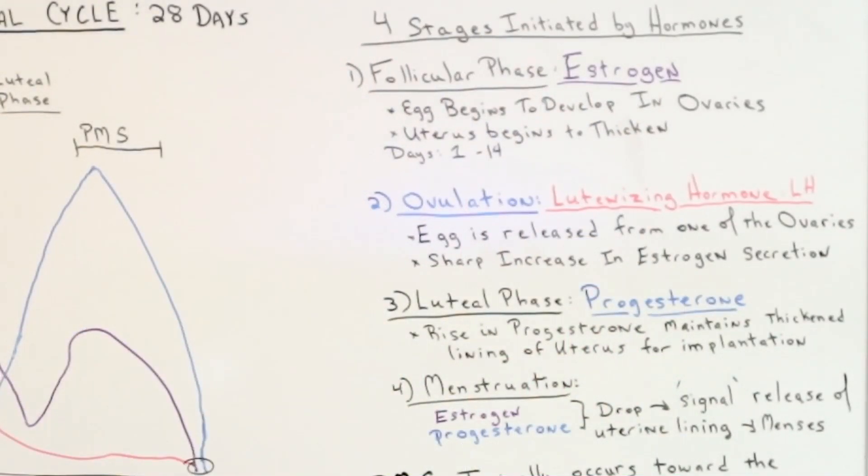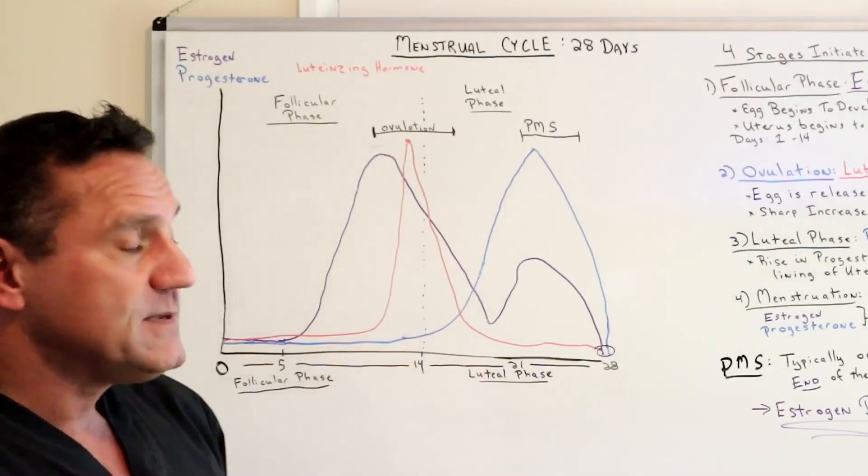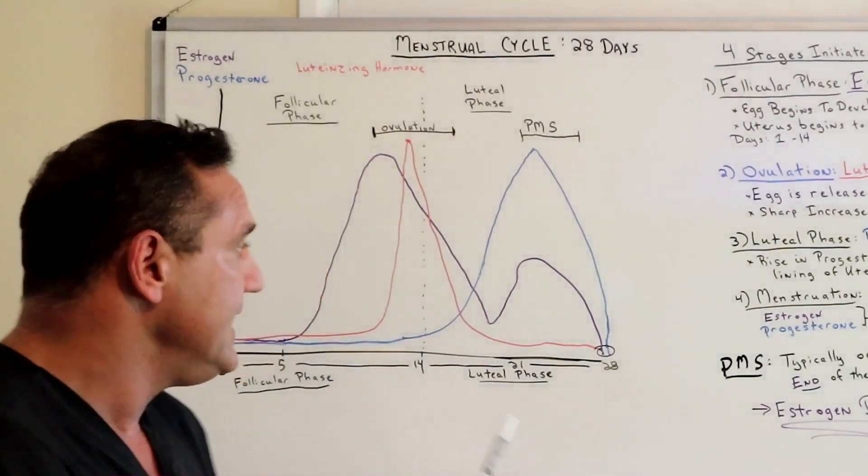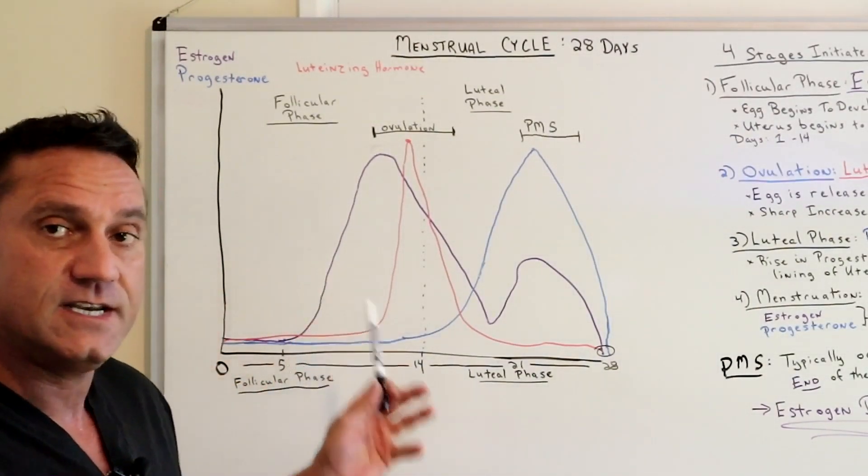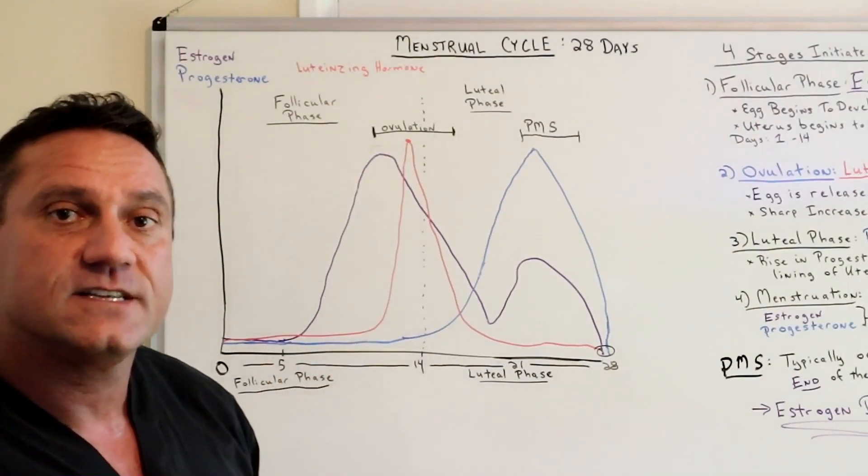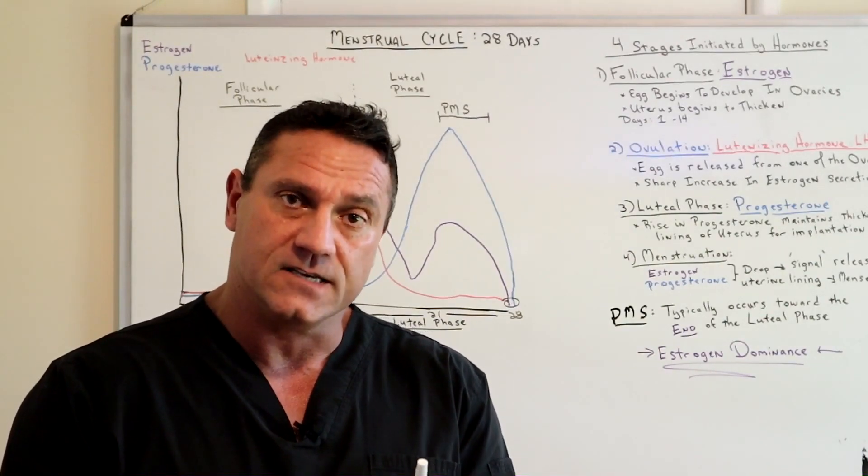Phase 1 is the follicular phase, which is days 0 through 14. What happens in the follicular phase? The hormone that's dominant is estrogen. Estrogen, the function of estrogen is for cell replication. So the egg begins to develop in the ovaries, the follicle. This is when the ovary is developing the egg.